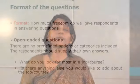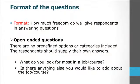The first type is an open-ended question. There are no predefined options or categories included; the respondent should supply their own answers. For example, if I ask them, 'What do you look for most in a job or in a course?' I would expect the respondent to tell me exactly what they are looking for — the characteristics, what they expect the end result to be, where it would take them, and what the prospects are.